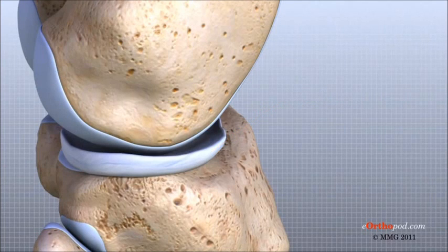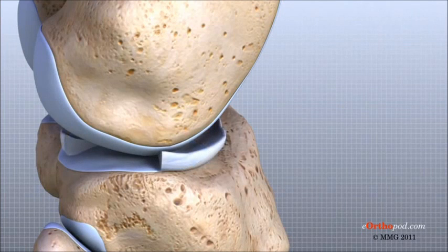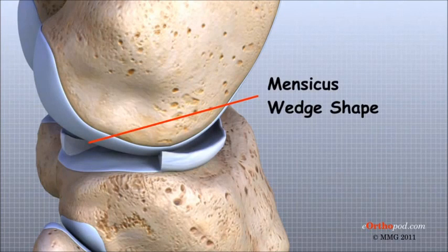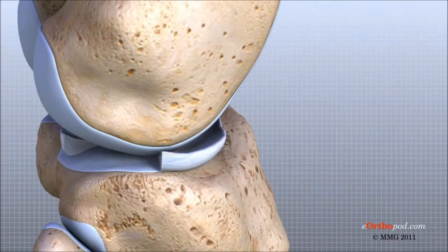Without the menisci, concentration of force into a small area on the articular cartilage can damage the surface, leading to degeneration over time. In addition to protecting the articular cartilage, the menisci help the ligaments with stability by acting like a wedge set against the bottom of a car tire. The menisci are thicker around the outside, which helps keep the round femur from rolling on the flat tibia, converting the tibial surface into a shallow socket. This makes the joint more stable and more efficient at transmitting weight from the upper body.